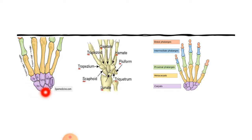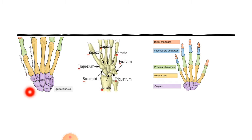Next we have the carpal bones. The carpal bones are arranged in a distal row and a proximal row, with each row containing four carpal bones. There is a mnemonic to help memorize the sequence of the carpal bones.